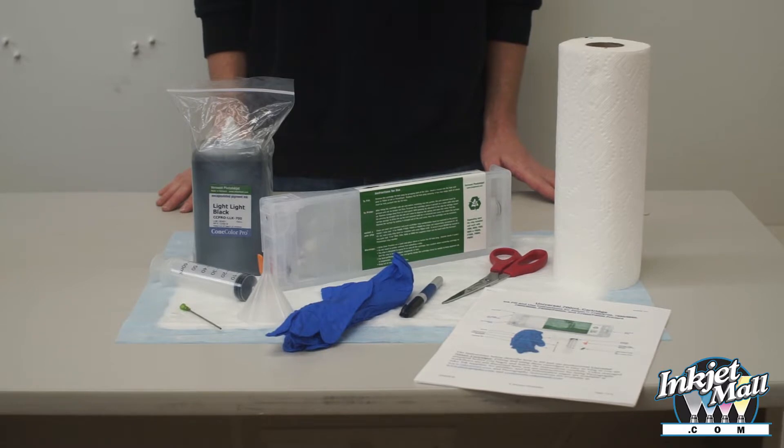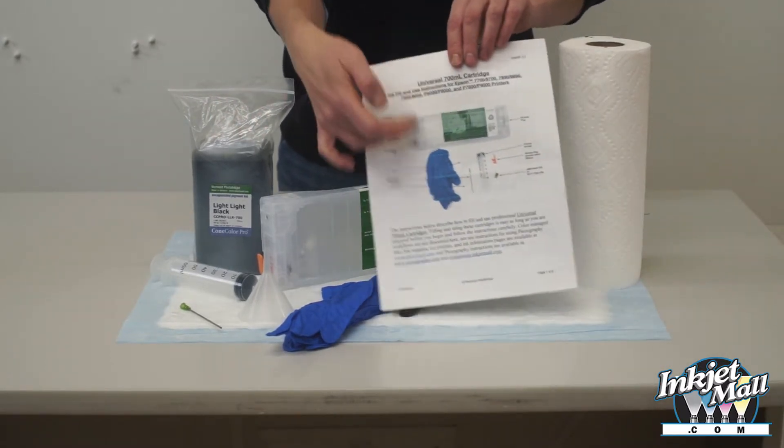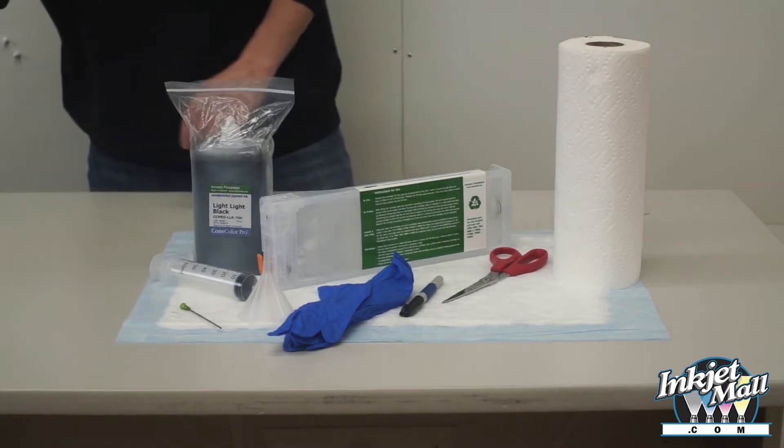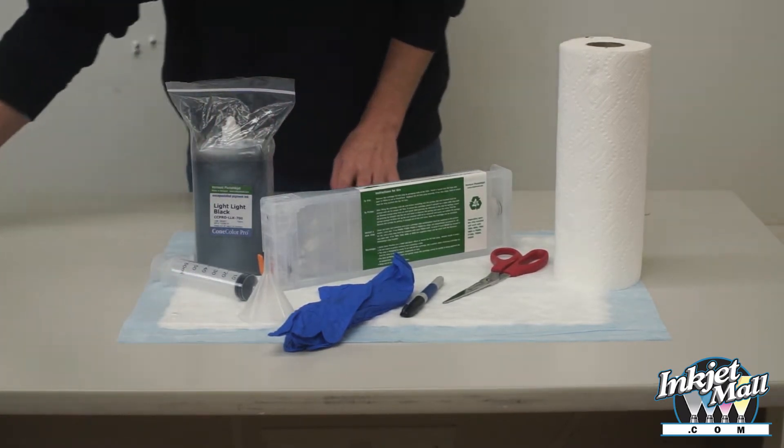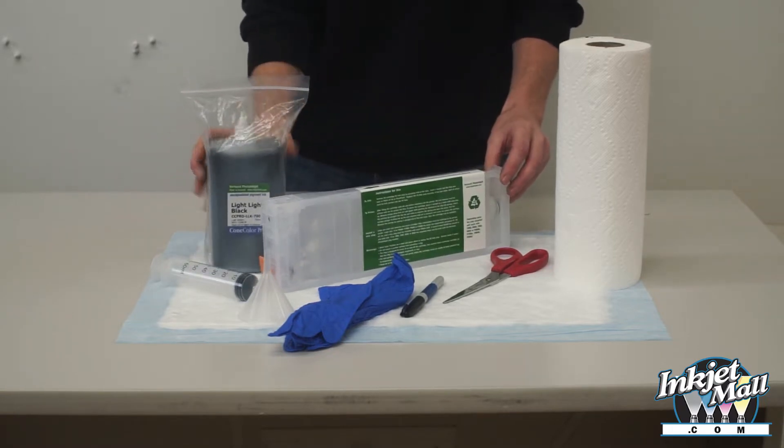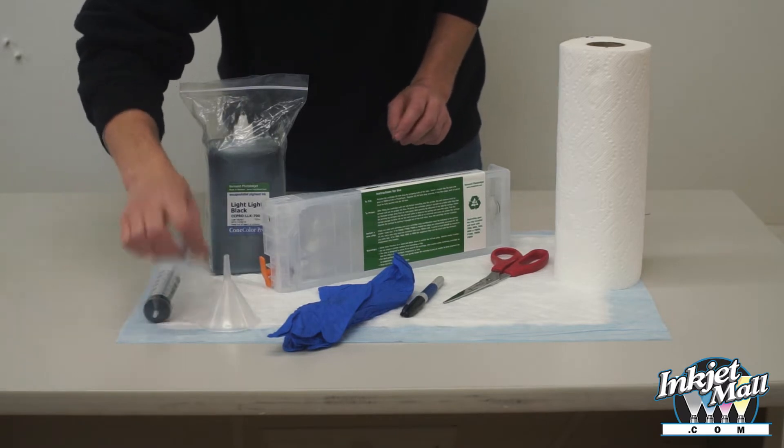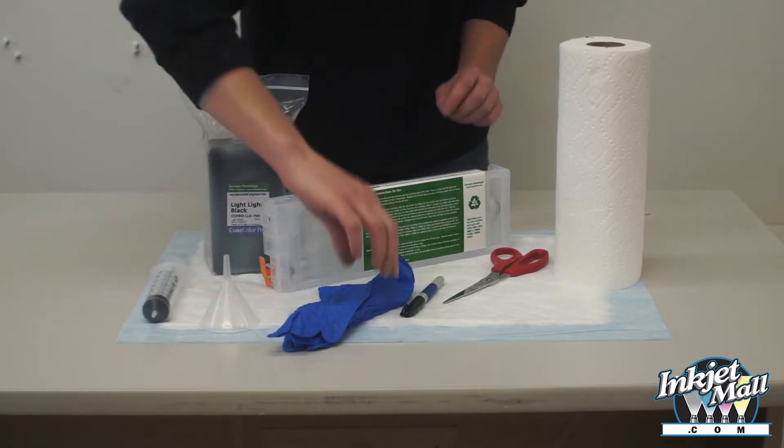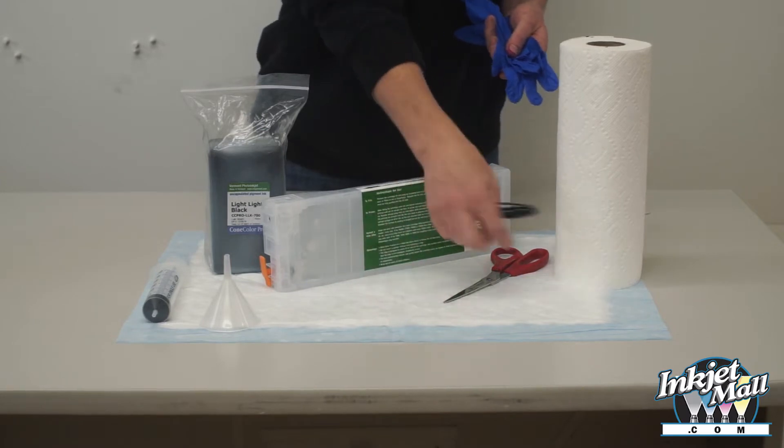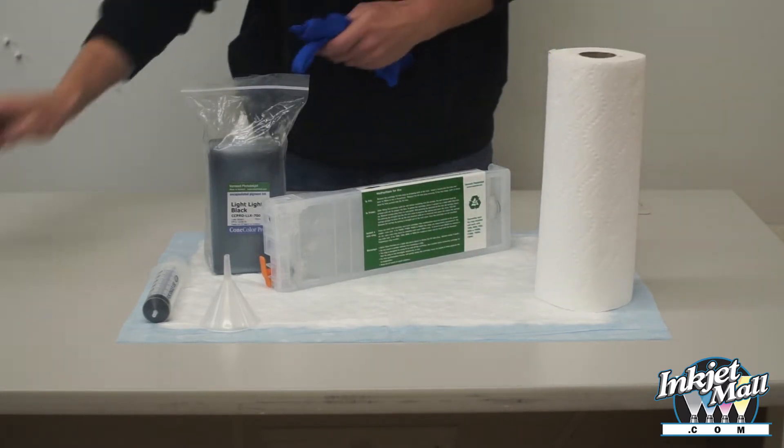You should have a set of instructions, a needle that you don't need, a 700 mil cartridge, a bottle of ink, a large syringe, a fill funnel, a priming tip, gloves, a sharpie, scissors, and a roll of paper towel.